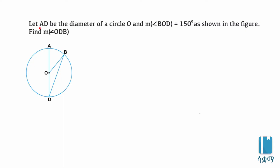Let AD be the diameter of circle O. The measure of angle BOD is 150 degrees, as shown in the figure. Find the measure of angle ODB.